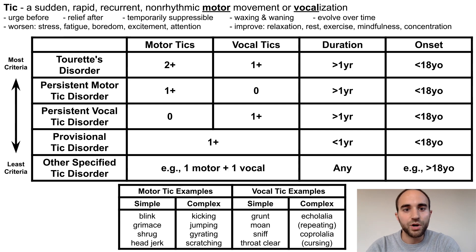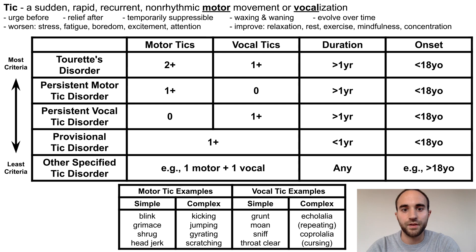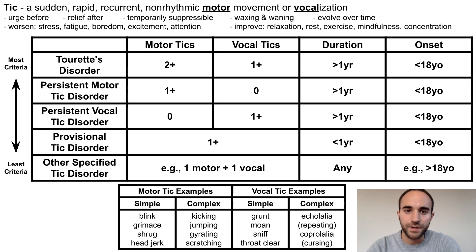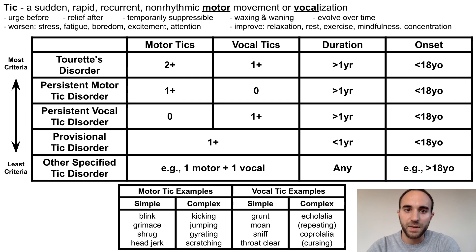Finally, this is more of an academic discussion than of practical importance, but the other specified tick disorder designation can be used when ticks are present, but number of ticks, duration, or onset do not fit cleanly into one of the other disorder categories. For example, consider a patient who has both one motor and one vocal tick that have lasted for longer than one year — this patient would not meet criteria for any of the other tick disorders, but these symptoms may be clinically important. Another example would be a patient whose ticks began when they were older than 18 years old.